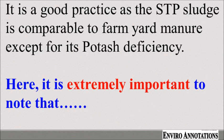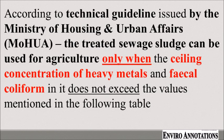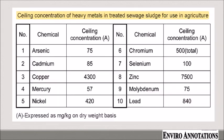Here, it is extremely important to note that, according to technical guidelines issued by the Ministry of Housing and Urban Affairs, the treated sewage sludge can be used for agriculture only when the ceiling concentration of heavy metals and fecal coliform in it does not exceed the values mentioned in the following table.